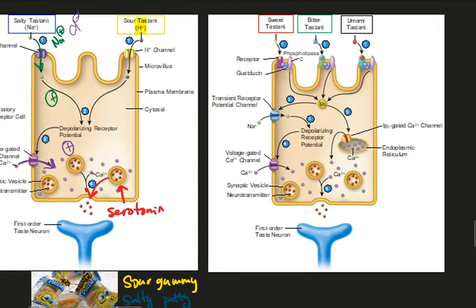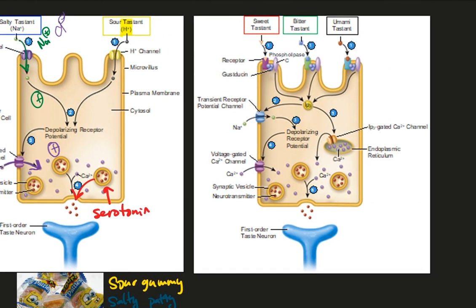Now, sweet, bitter, and umami tastes involve a G-protein coupled receptor. Let's see that in action. Firstly, we have to identify tastants for sweetness, bitterness, and umami. In this example, we will use glucose as a tastant for sweetness. Note that there are other tastants that can trigger these receptors, but memorizing such is beyond the scope of this class.